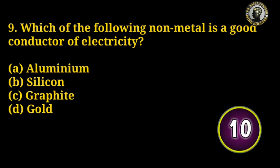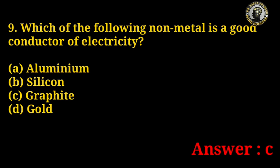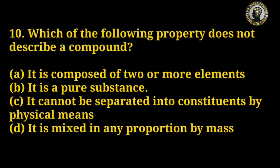Question number 9: Which of the following non-metals is a good conductor of electricity? Options: aluminium, silicon, graphite, gold. The right answer is C — graphite.